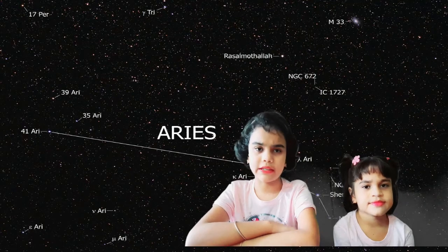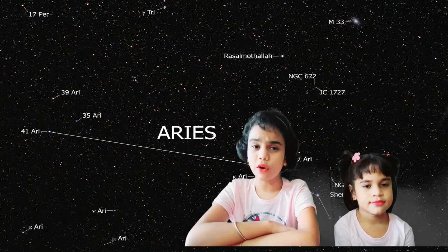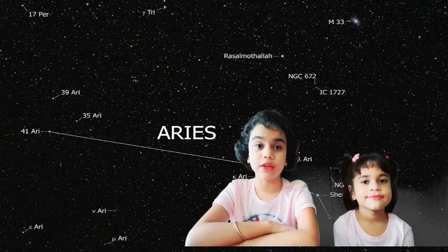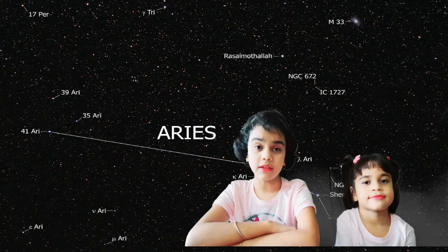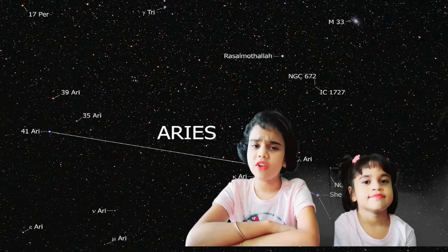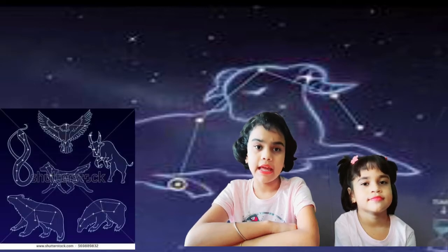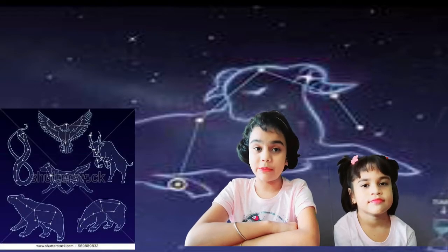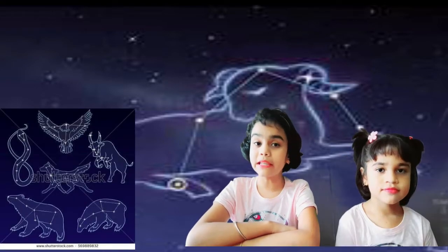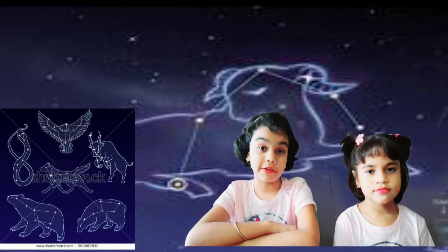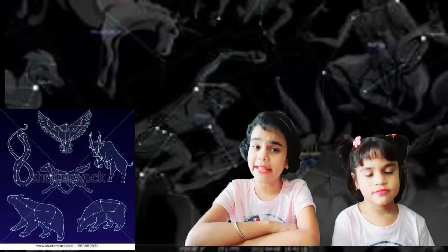What is a constellation? A constellation is a group of stars forming various patterns in the sky, like animals, mythological persons, or any creature.